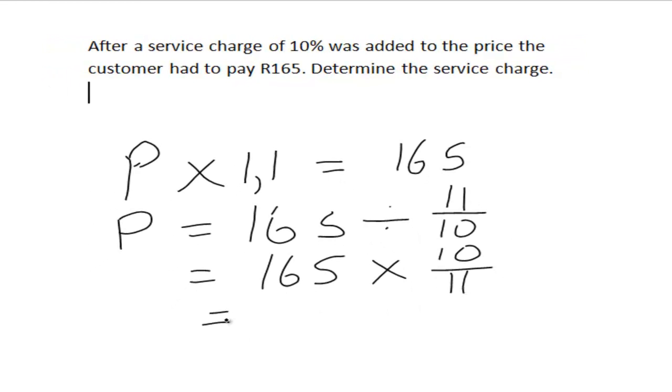And 11 will go there once, 11 will go there 15 times. 15 times 10 is 150 Rand. And that is your initial price of the item.